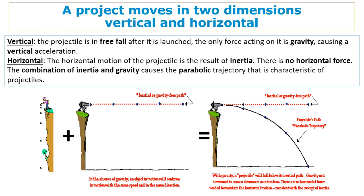A projectile moves in two dimensions: vertical and horizontal. In the vertical direction, the projectile is in free fall after it is launched. The only force acting on it is gravity, causing vertical acceleration — just like when you drop a ball.